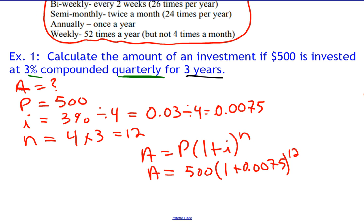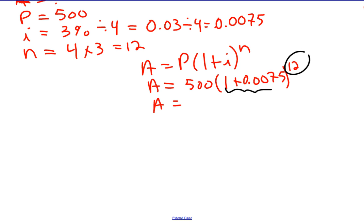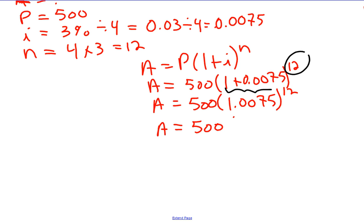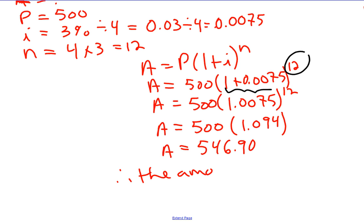Now we plug into the equation A equals P bracket one plus i to the n. P is five hundred, i is 0.0075, and n is twelve. Be careful — order of operations is important: do the brackets first, then the exponent, then the multiplication. One plus 0.0075 equals 1.0075. Then 1.0075 to the power of twelve equals approximately 1.094. Then five hundred times 1.094 gives us 546.90. Therefore the amount is five hundred and forty-six dollars and ninety cents. That's how we use the compound interest formula to calculate an amount.